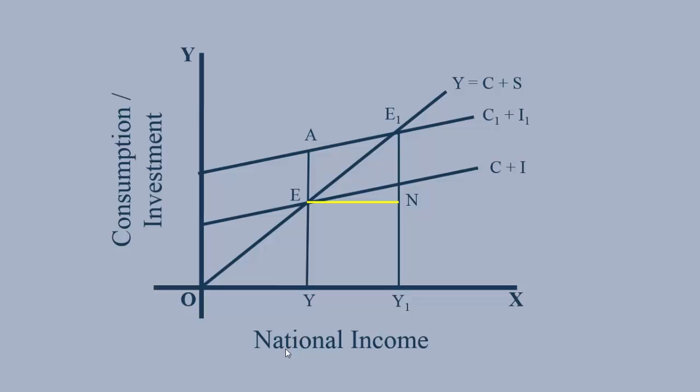This must be parallel to X-axis. Since the Aggregate Supply Curve is a 45 degree line, EN is equal to NE1. Hence, E1N represents change in income, that is Delta Y.